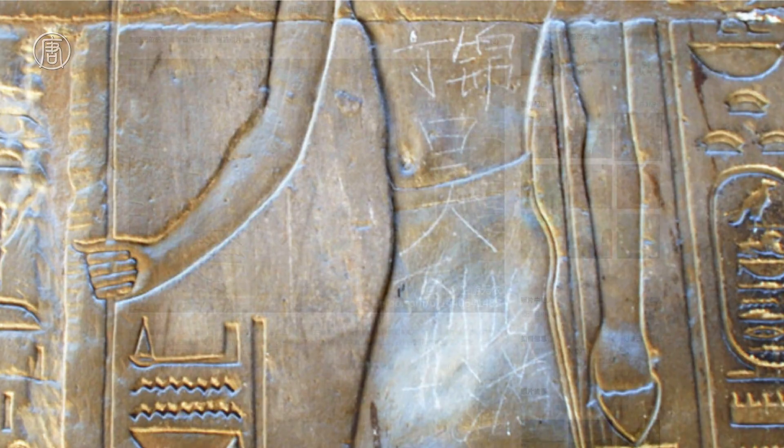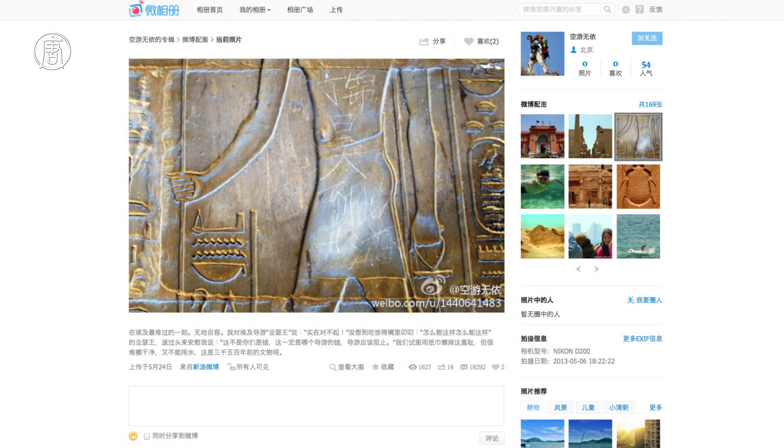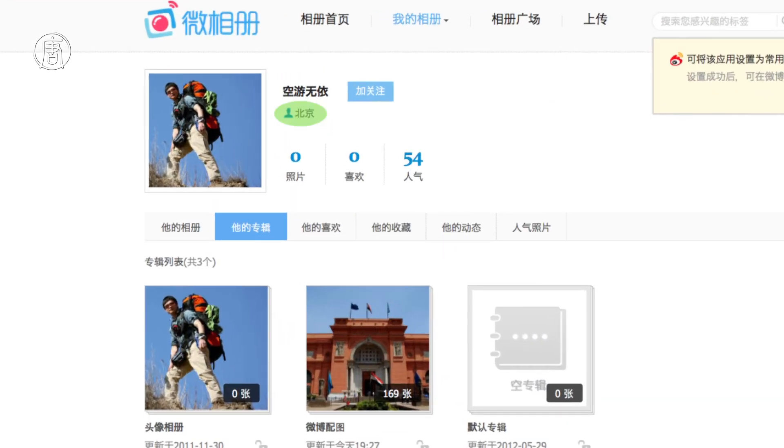It's written in simplified Chinese characters, indicating it was written by a tourist from mainland China. The picture was posted on Sina Weibo, China's version of Twitter, by this guy from Beijing. He described seeing the Chinese graffiti as the saddest moment on his vacation to Egypt.